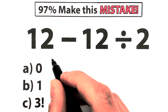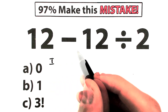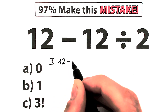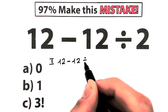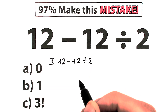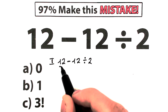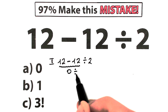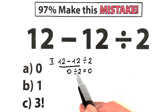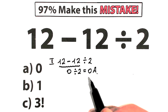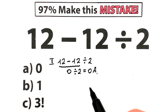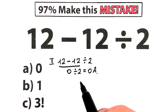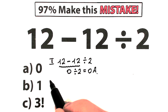This is our first interpretation — I want to start with this solution. So right here we have 12 minus 12 divided by 2. The first type of student solves this question like that: they say 12 minus 12 on the left-hand side equals 0, then 0 divided by 2 equals 0. This is option A, and they move on to the next question.